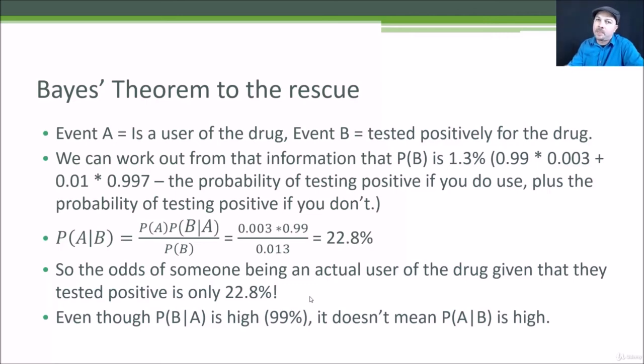If you're going into the medical profession or working with big data, please remember this. Always remember that the probability of something given something else is not the same thing as the other way around, and it depends a lot on the base probabilities of both things you're measuring. The probability of a drug test being accurate depends a lot on the overall probability of being a drug user in the population, not just the accuracy of the test. Bayes' theorem gives you the tools to quantify that effect.